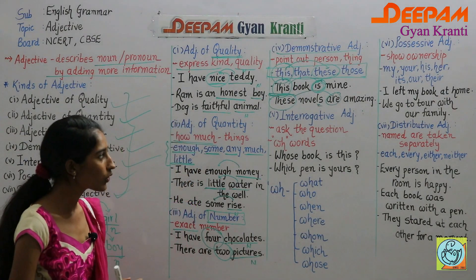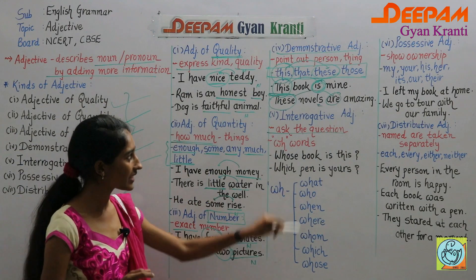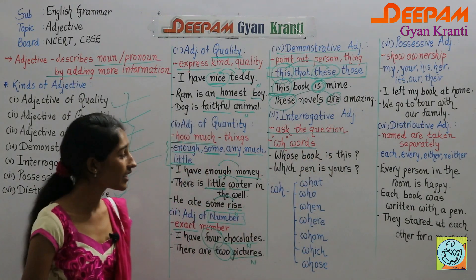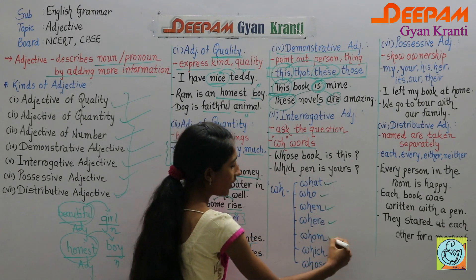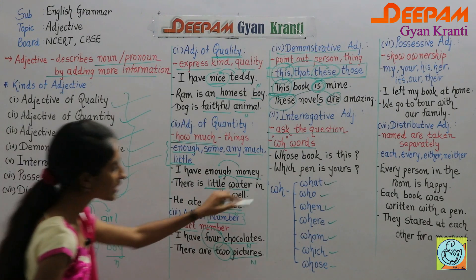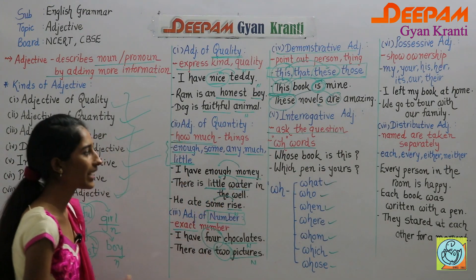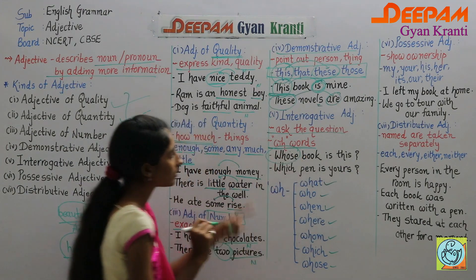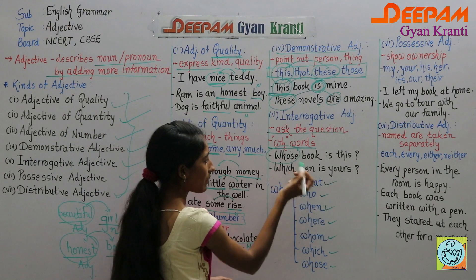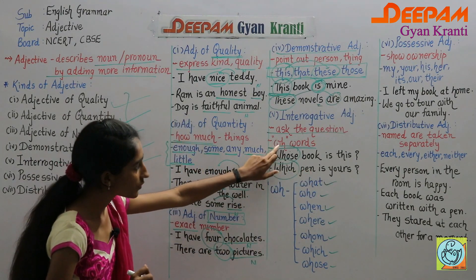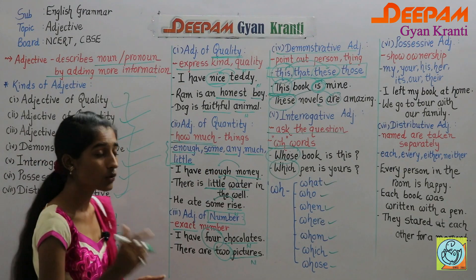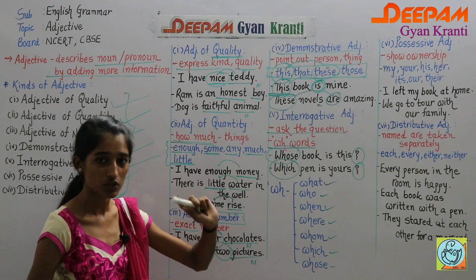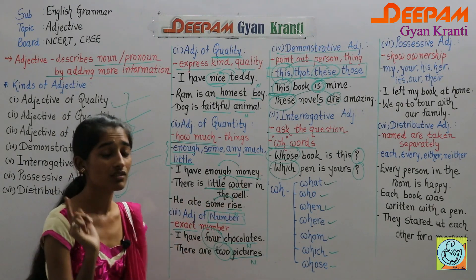Next is interrogative adjective. When you ask a question, it becomes an interrogative adjective. Generally we ask questions with WH-words: what, who, when, where, whom, which, whose. For example, 'Whose book is this?' — 'whose' is the interrogative adjective. 'Which pen is yours?' — 'which' is the interrogative adjective. Don't forget to put a question mark at the end, because without it the sentence is grammatically incorrect.